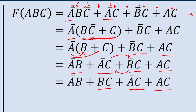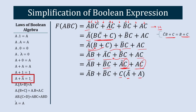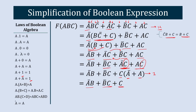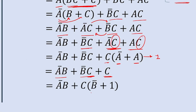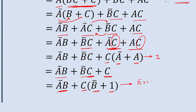Now C is common in the last two terms — ĀC and AC. Factoring out C gives: C · (Ā + A). Since Ā + A = 1, we replace this with 1, giving: ĀB + B̄C + C. Now in B̄C and C, C is common again. Factoring out C gives: ĀB + C · (B̄ + 1). By the identity A + 1 = 1, we have B̄ + 1 = 1.